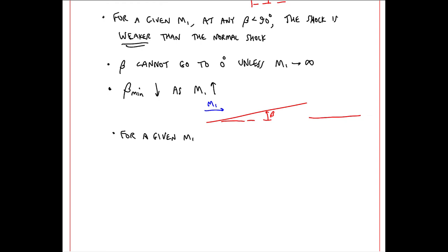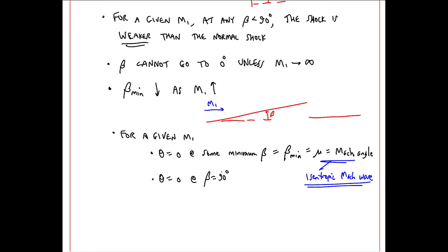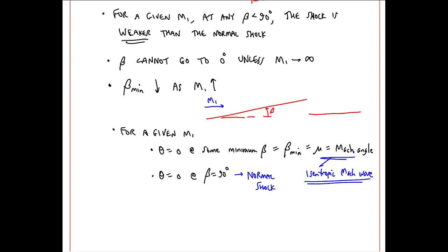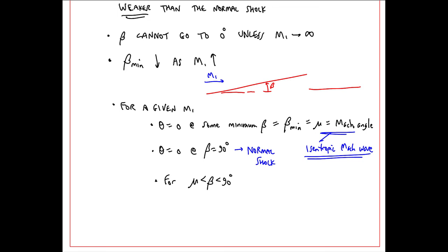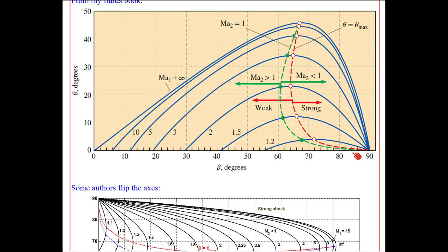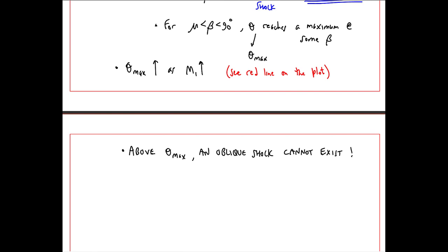For a given M1, theta equals 0 at some minimum beta, which is equivalent to the Mach angle. This is the case of an isentropic Mach wave. The opposite extreme is that theta equals 0 at beta equal 90 degrees, which is the normal shock case. For beta between mu and 90 degrees, theta reaches a maximum at some beta. We'll call this theta max. Furthermore, theta max increases as M1 increases. We see this in the red line on the plot, where I connected points of maximum theta. Everything to the right of this red line is called a strong shock, and everything to the left is called a weak oblique shock.